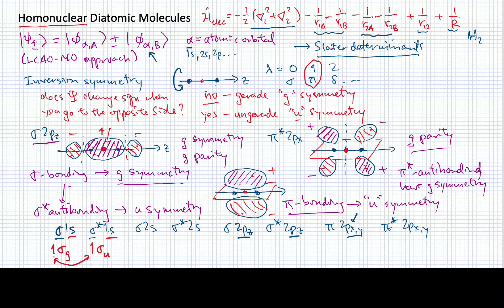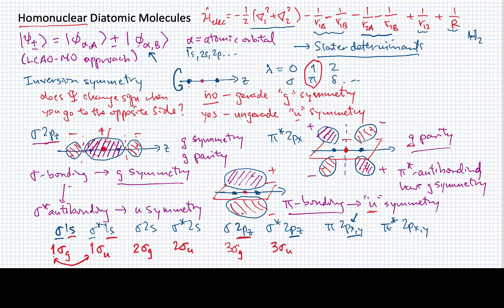When we go to the next sigma orbital, we label it 2: 2σg for its bonding component and 2σu for its anti-bonding component. Likewise, even for ones that come from a p-orbital, we call them 3σg and 3σu. When we get to the pi orbitals, remember that the bonding one has u-symmetry and the anti-bonding one has g-symmetry. So this will be 1πu for bonding and 1πg for anti-bonding.